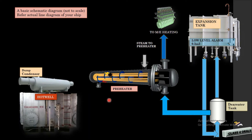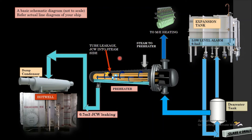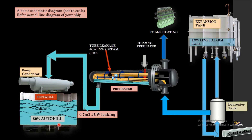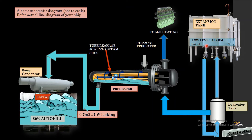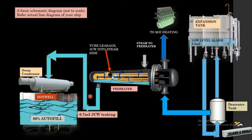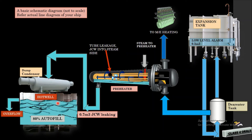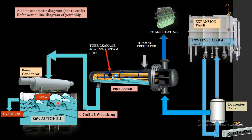But suppose there is a leakage or tube burst in the preheater. As we discussed earlier, the jacket cooling water will make its entry to the steam side and mix with the condensate. Then the condensate will go to the dump condenser, and from the dump condenser, the jacket cooling water will enter into the hot well. The hot well is already 80% filled, and the low level alarm of the expansion tank is at 0.3 cubic meters — meaning 0.7 cubic meters of jacket cooling water enters the 80% filled hot well, causing it to overflow.